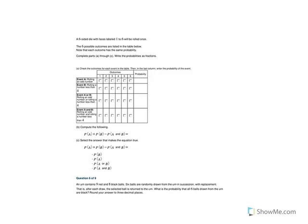Here we have a six-sided die with faces labeled 1 to 6 to be rolled. We're looking at the outcomes to identify event A and event B. What is the probability of rolling an odd number? That would give us a probability of three out of six.